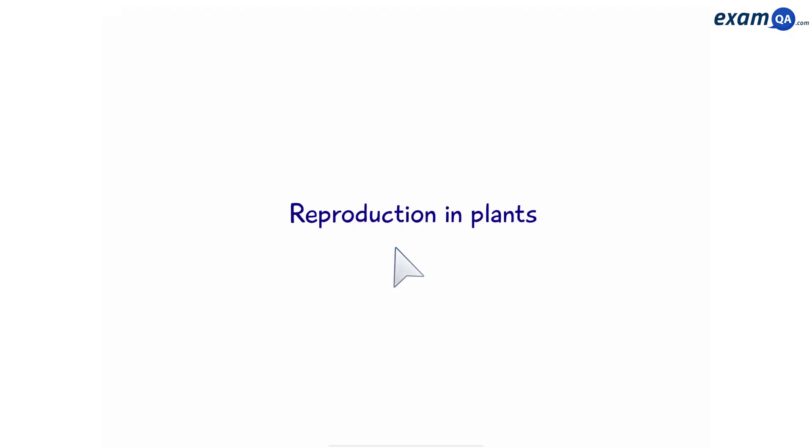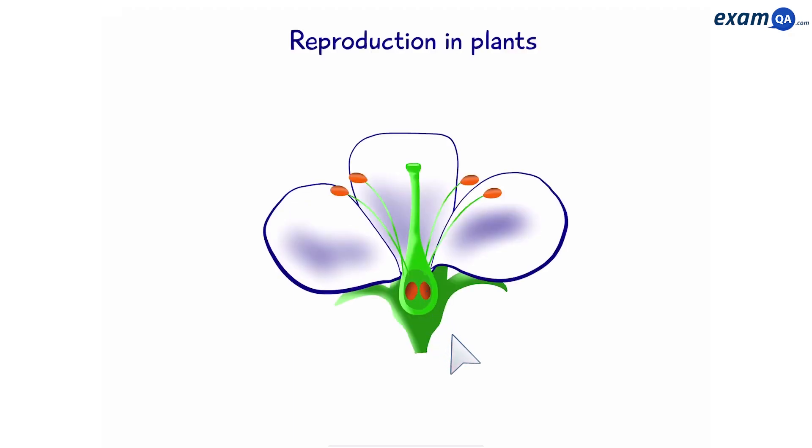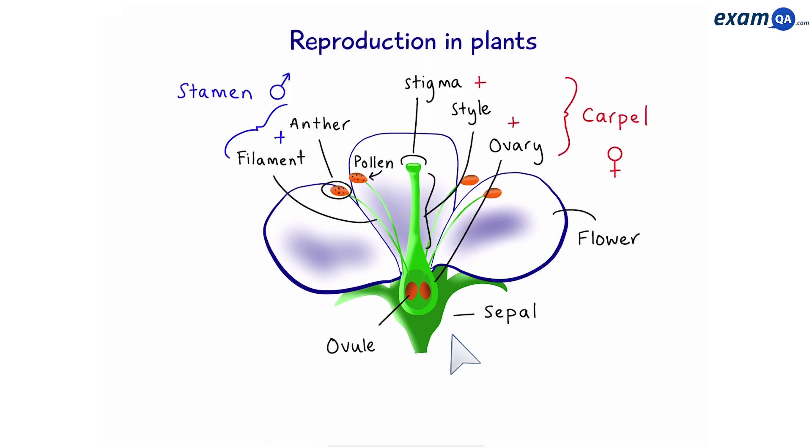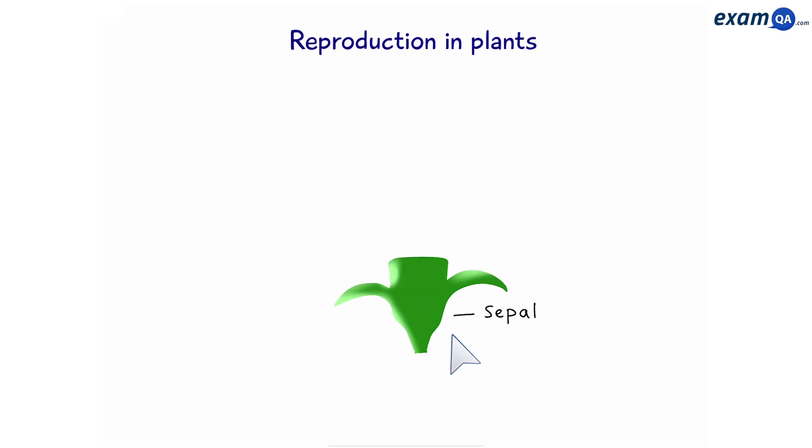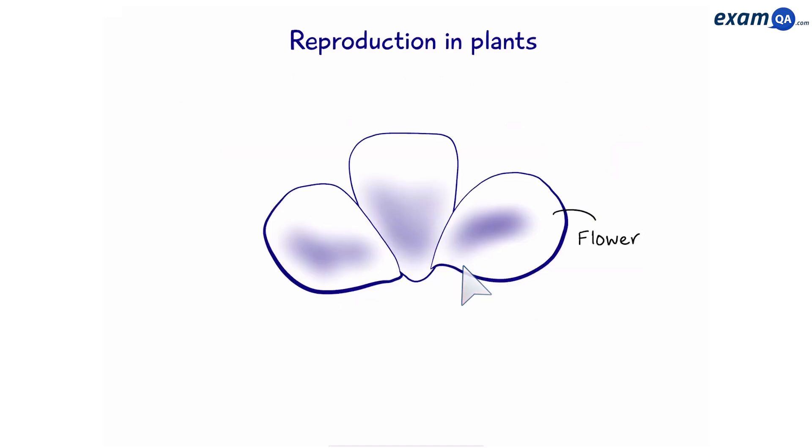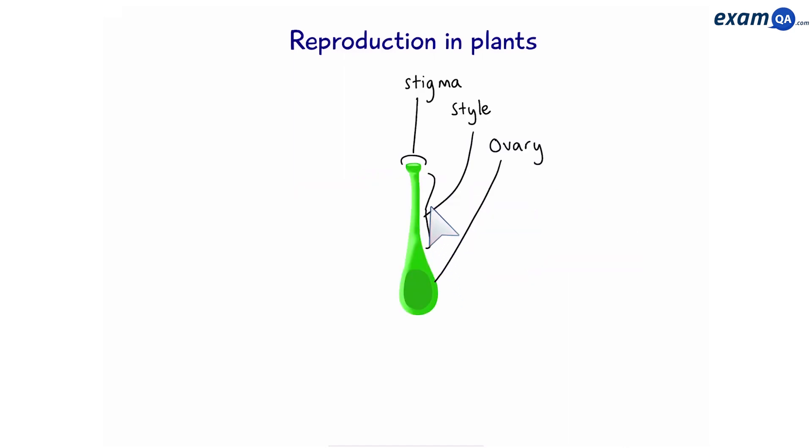Reproduction in plants. Here we have a flower, and these are all the different parts of the flower that we have to know. Don't worry if you don't know all of them. We're going to go through each one by one. So this part is called the sepal. Here we have the flowers. This is the stigma, style and ovary.